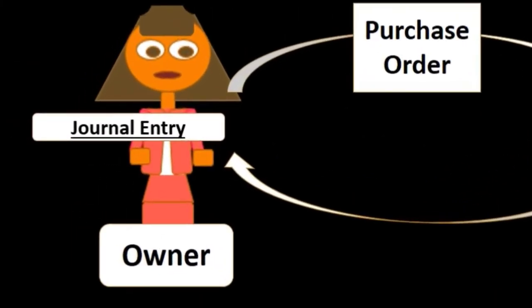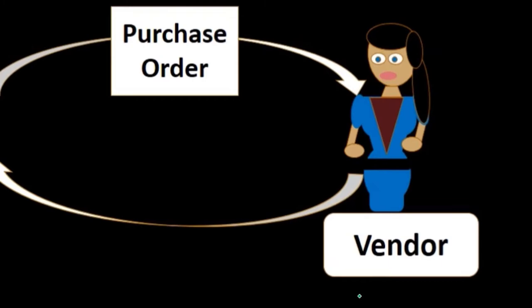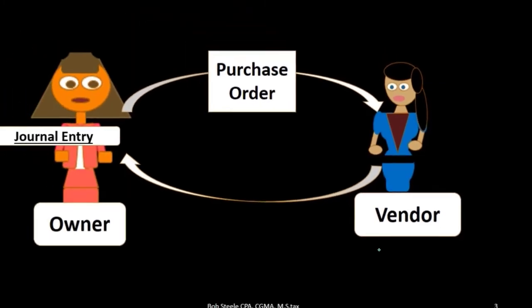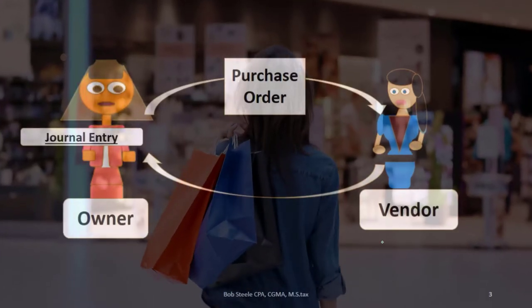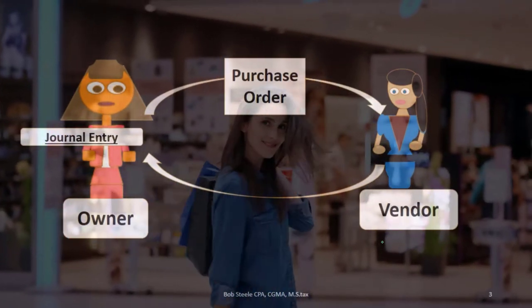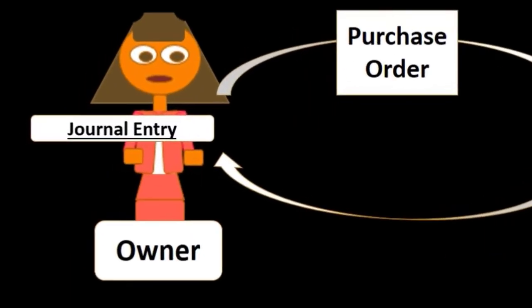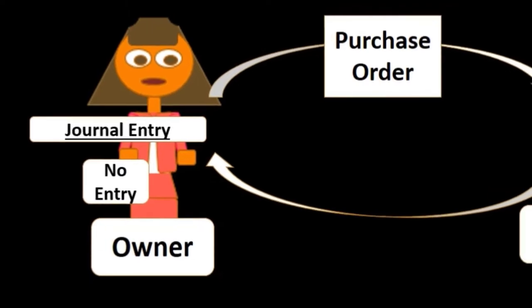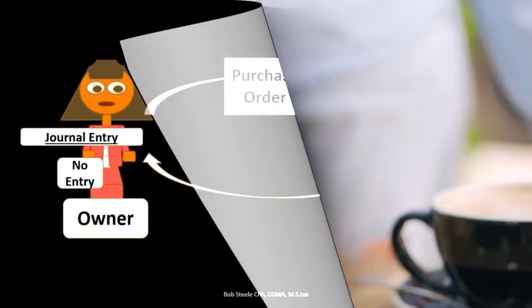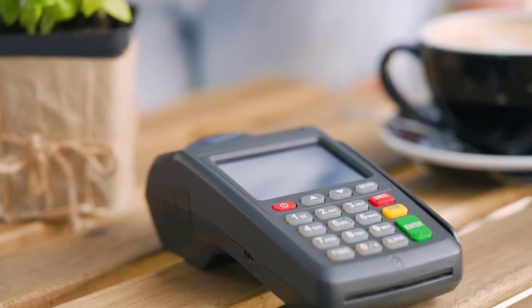This is a little different than when we make a purchase ourselves on the individual side of things — say from something like Amazon. If we buy something there, we usually make the payment at the point in time that we request the goods. But in this business case, no journal entry is made. We're not recording anything because we haven't received the goods and haven't made a payment — we're just requesting the goods.